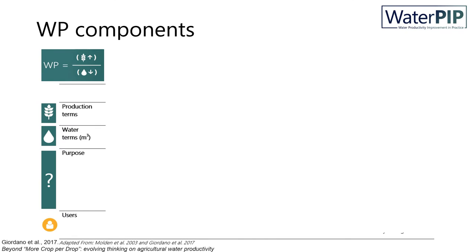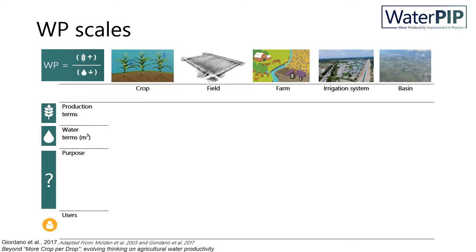I will describe these different scales of application using the following water productivity components: what is typically considered the production terms, water use terms, the general purpose of the assessment, and typical use of the water productivity assessment at that particular scale. We will investigate the following scales: from crop, field, farm, to irrigation scheme, and finally closing with the basin scale.